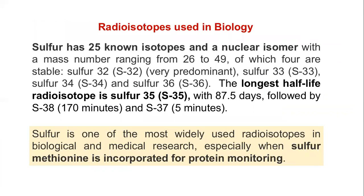The next widely used radioisotope in biology is the isotope of sulfur. Sulfur has around 25 known isotopes with mass numbers ranging from 26 to 49, of which four are considered stable: sulfur-32, sulfur-33, sulfur-34, and sulfur-36. The longest half-life radioisotope of sulfur is sulfur-35, with a half-life of 87.5 days. Sulfur-35 is widely used in biological as well as medical research, especially for monitoring protein molecules.